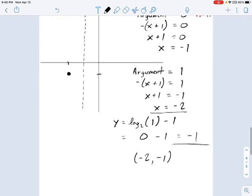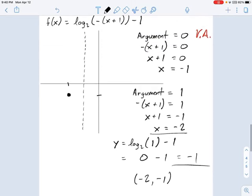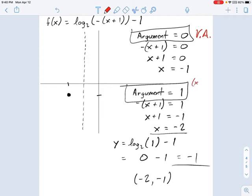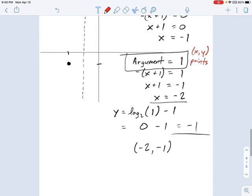Okay, so now there's only one more thing to do. We've evaluated where the argument is zero. That's a vertical asymptote. We've evaluated where the argument equals one. Okay, that is one of the x, y points.